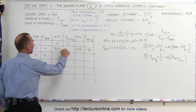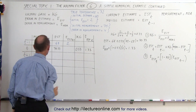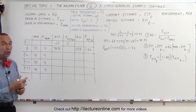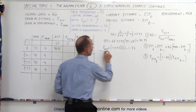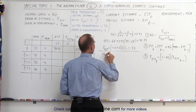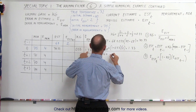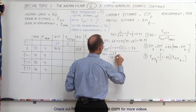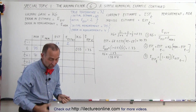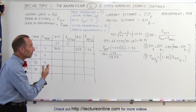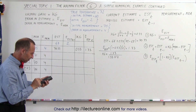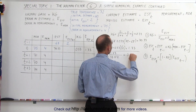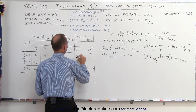The next measurement we took was 71, so let's see how that gives us a new Kalman gain, a new estimate, and a new error in the estimate. With a new value of 71, the Kalman gain is equal to the error in the estimate, which is now 1.33, divided by 1.33 plus 4. Notice that the error in the measurement does not change — if you're using the same apparatus, you expect the same error there. So that's 1.33 divided by 5.33, giving us a new Kalman gain of 0.25.